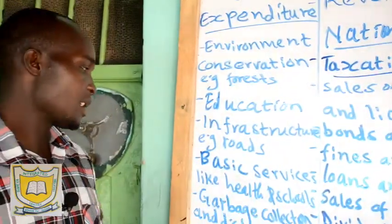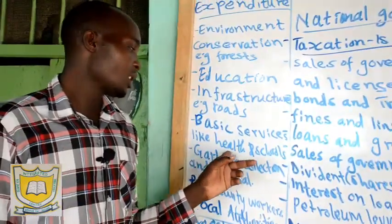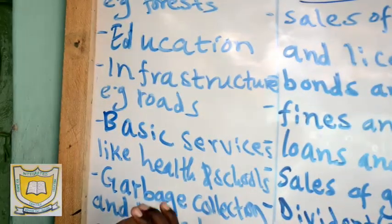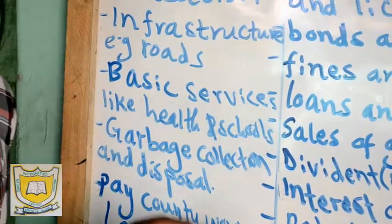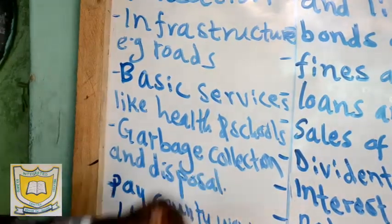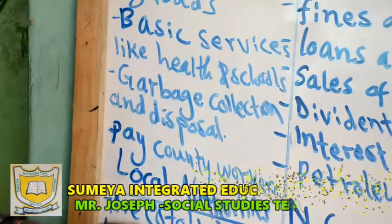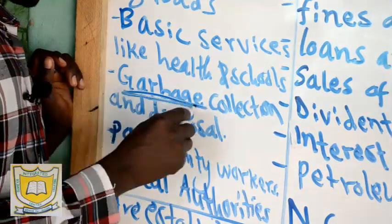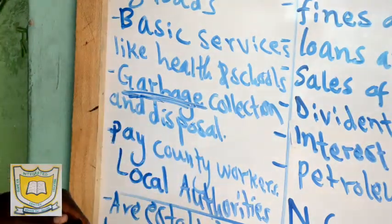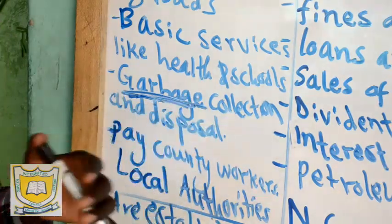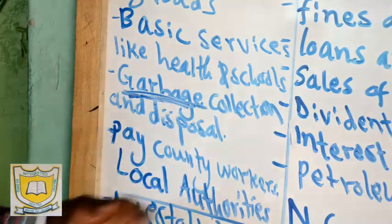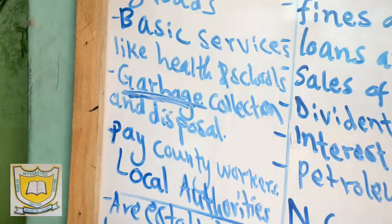Then basic services like health: employing county health officers to work in hospitals, purchasing drugs and equipment for hospitals. Schools also get learning materials. Then we have garbage collection and disposal. In towns, lorries and trucks rotate collecting garbage — those materials that make the environment dirty, like banana peels or biscuit wrappers. The county government mobilizes collection of garbage and disposes of it, and the workers involved are paid.